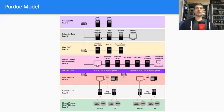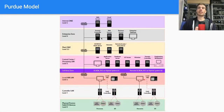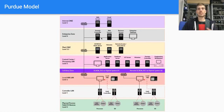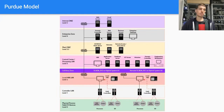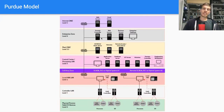We have the Purdue model, as you're all aware of. We have a couple of layers where in each layer we have different devices with different capabilities and roles. In the lowest level, level zero, we have field devices — actuators and sensors — that are sensing and doing actual physical work in our world.